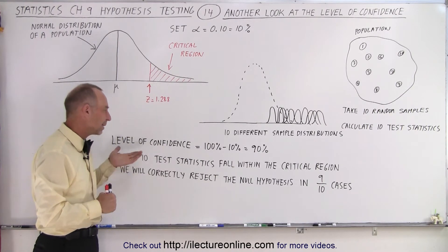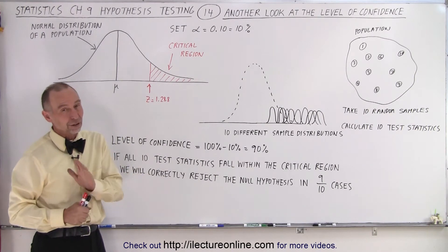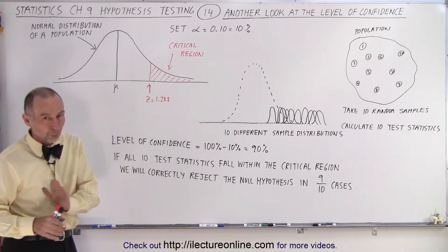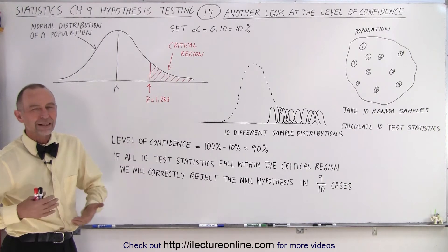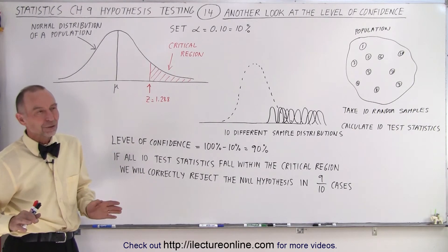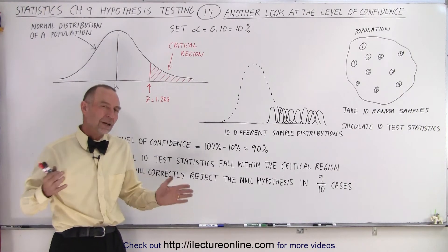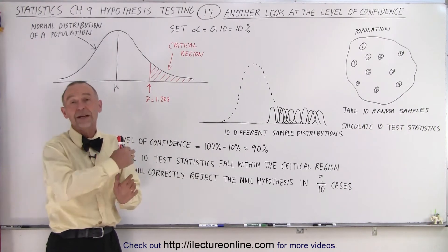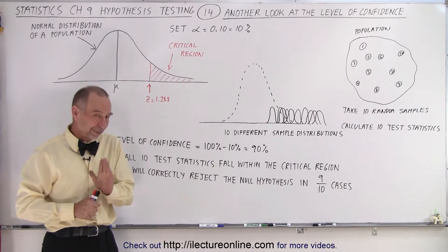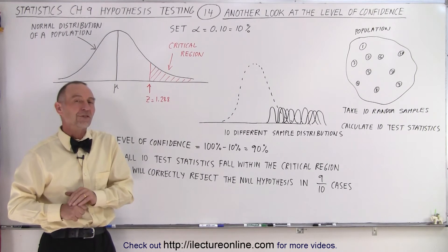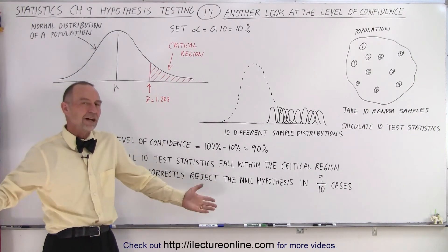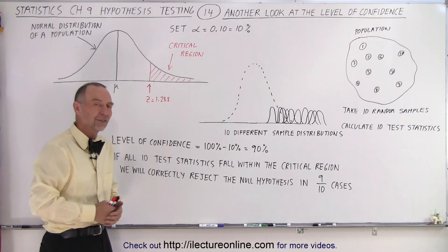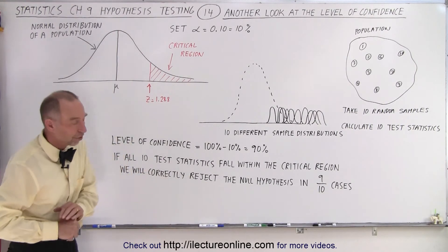But since there's only 90% confidence, chances are that one of those 10 decisions was a wrong decision. And that's why we have that level of confidence. Yes, you're 9 out of 10 confident that you made the right decision by rejecting the null hypothesis, but there's a 10% chance you made the wrong decision. And that's what we mean by the level of confidence. We have 90% confidence that if we reject the null hypothesis, we made the right decision.